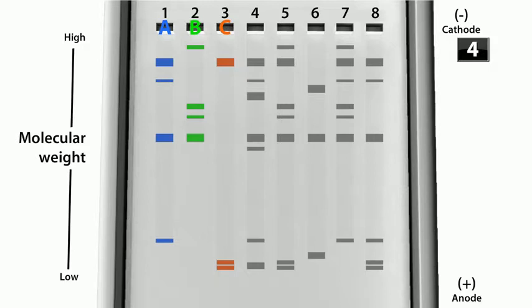What you see here is that on well number four, this sample has bands that match up exactly with well number one. So you know that in well number four you have sample A, which was in well number one. But there are also some other segments of DNA that you don't see in wells one, two, or three. So not only does well number four have sample A, it also has some other unknown DNA sample.